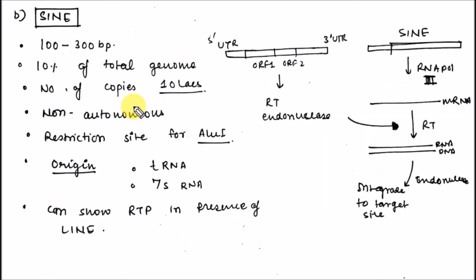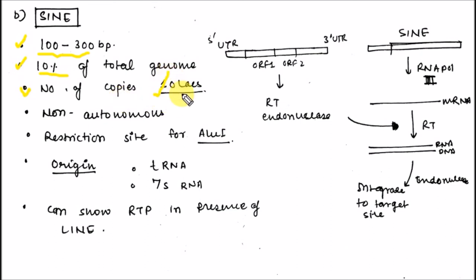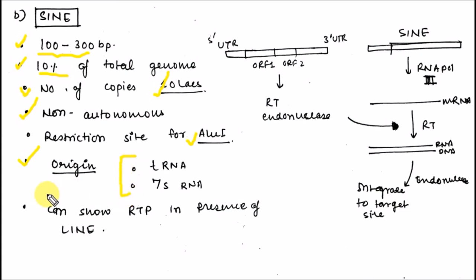Let's discuss SINE elements. SINE elements are non-autonomous in nature. The size of SINE elements is very small in comparison to LINE, that is 100 to 300 base pairs, and they are present in about 10% of the total genome. The number of copies is more than LINE elements — LINE has about 500,000 copies while SINE has about 1,000,000 copies. In SINE elements, the restriction site of Alu1 is present, and the origin of SINE elements is the synthesis of tRNA or 7S RNA.